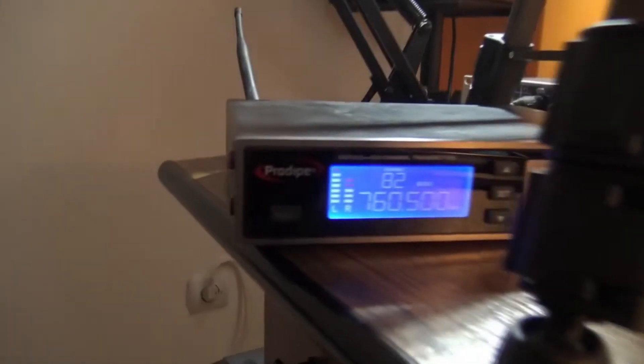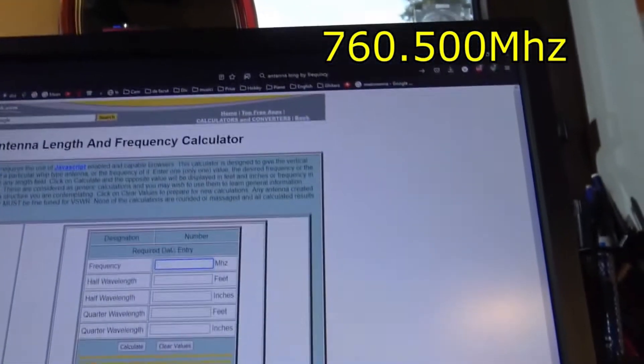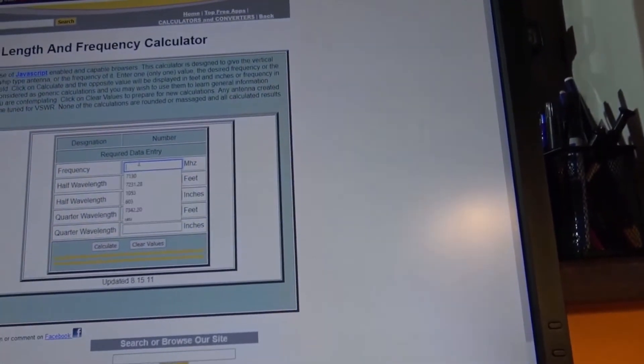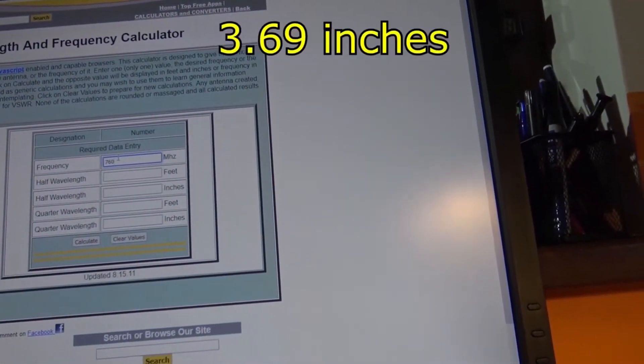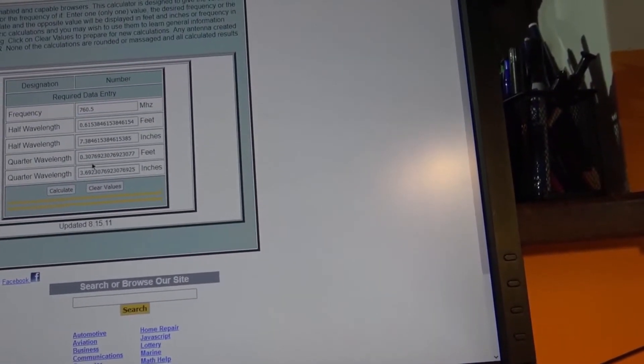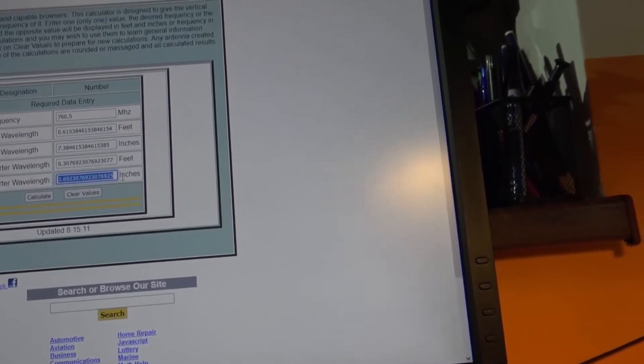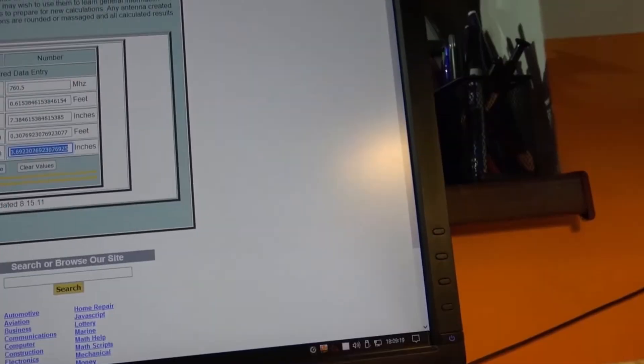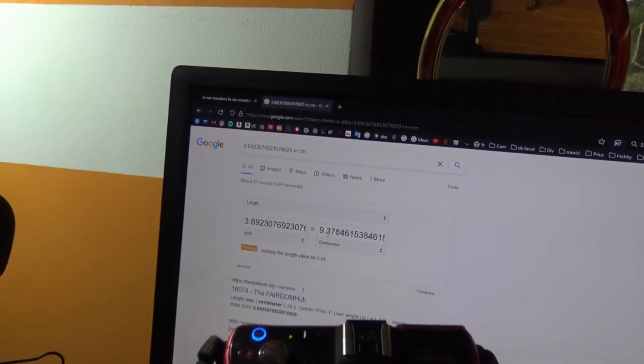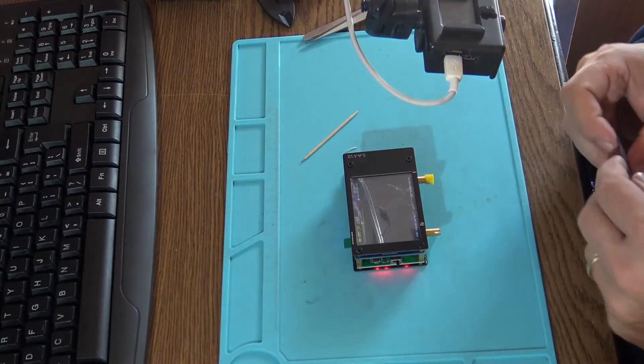You see, I found this antenna calculator online, so all we have to do now is to introduce the right frequency—760.5 megahertz. So let's say we have the shortest one, it's 3.69. This value here we have to transform it into centimeters. Okay, so we got a value of 9.3784 centimeters. That's how long the wire will be.